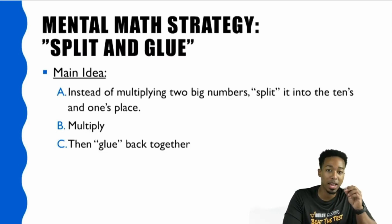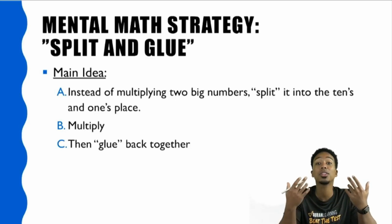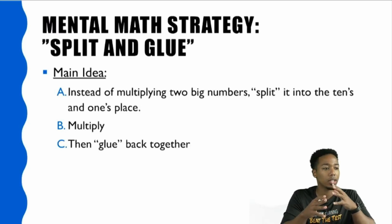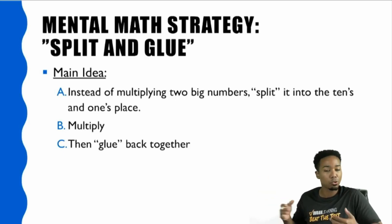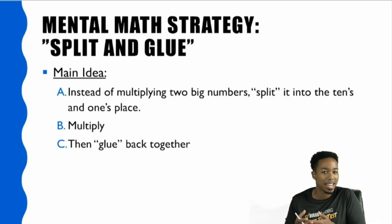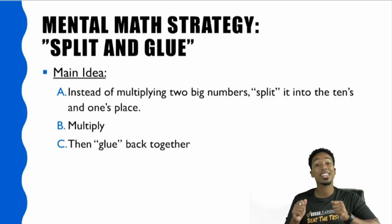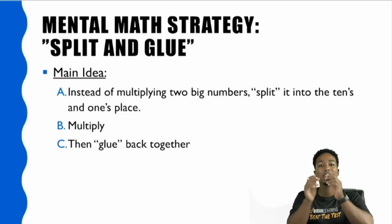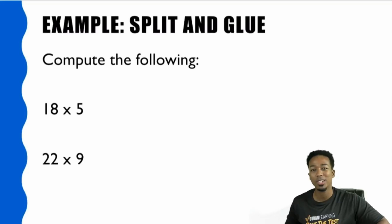We're talking here about mental math, specifically the split and glue strategy. We want to save time and there's a perfectly good way to do it. If you struggle with looking at something like 55 times 6, I can tell you right now we can actually do that in our heads. The main idea here is instead of multiplying two big numbers, let's split it into the tens and the ones place. The idea is to split a big operation up into two smaller operations, do the operations, and glue it back together.